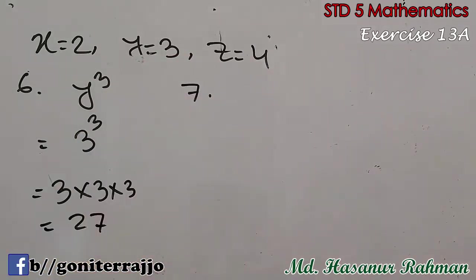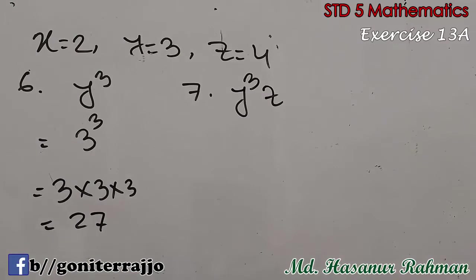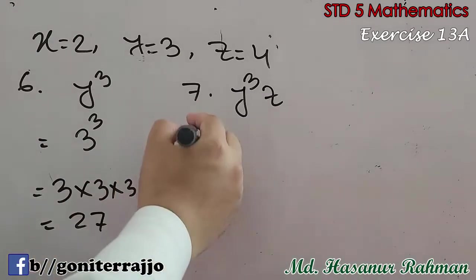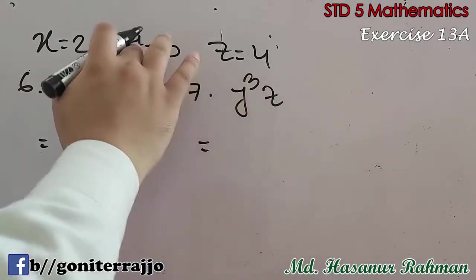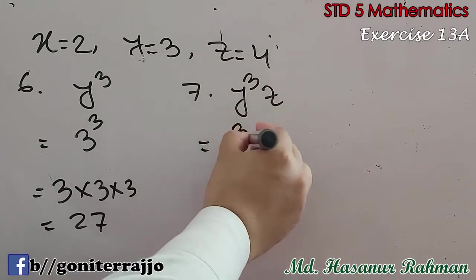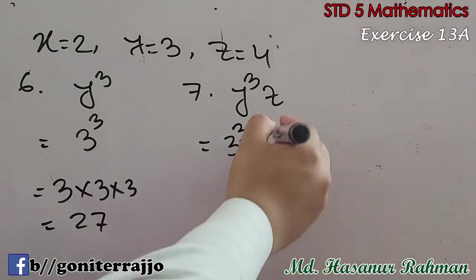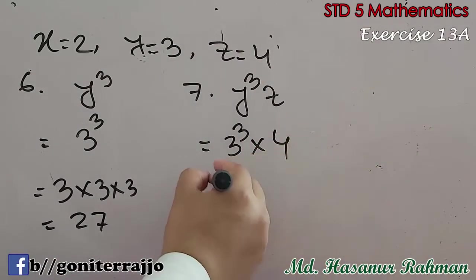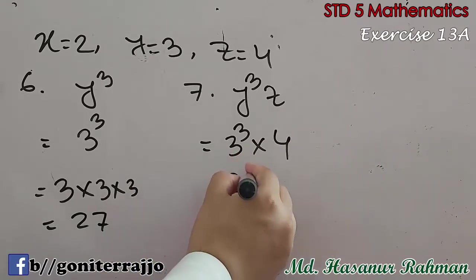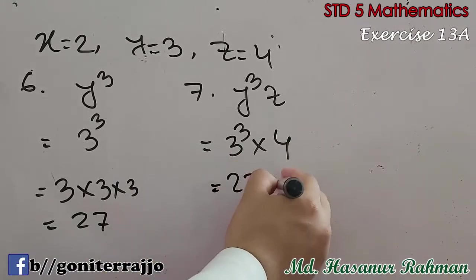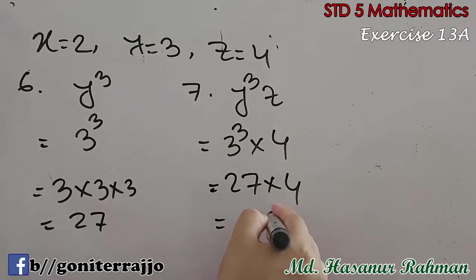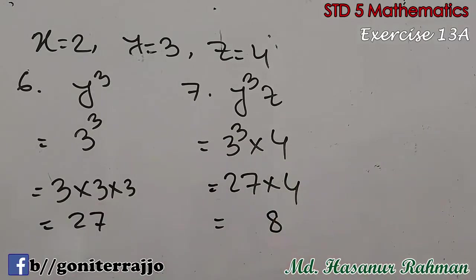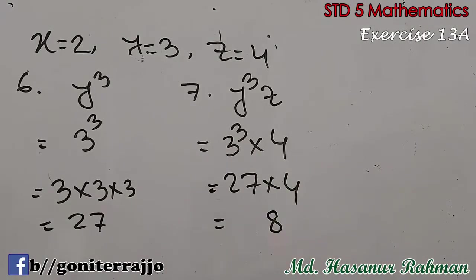Now number 7: y³z. So here y — the value of y is 3 — so 3 cube into the value of z, which is 4. 3 cube means 27, times 4. 4 times 7 is 28, carry 2; 4 times 2 is 8, plus 2 is 10. So the answer of number 7 is 108.